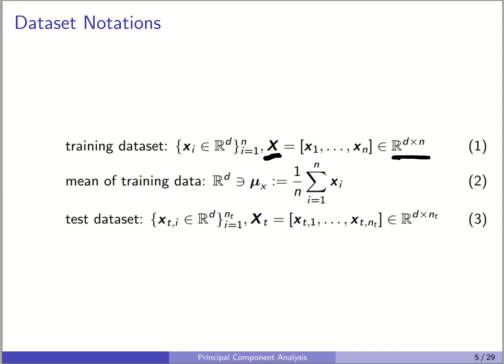The mean of training data is denoted by mu_X, and it is also d-dimensional — just the average of data points. We also assume we have some test data points, or out-of-sample data points. We have n_t of them, and they are also d-dimensional. We denote them by x_t_i (t stands for test), and we put them column-wise in matrix X_t, which will be d by n_t. These test data points will not be used for finding the PCA directions or for training.